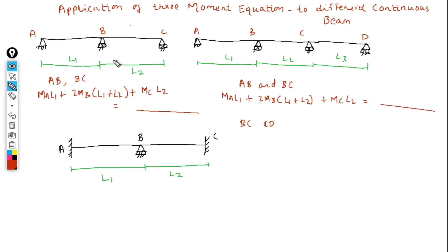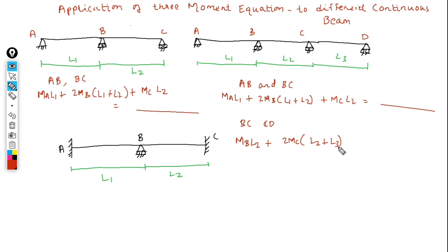In the previous case we had only one unknown, so one equation was sufficient. In this case we have two unknowns, Mb and Mc, so we require two equations. Apply the Three Moment Equation to spans BC and CD: Mb·L2 + 2·Mc·(L2 + L3) + Md·L3 = (right-hand side). In this way you can apply the Three Moment Equation to a three-span continuous beam.